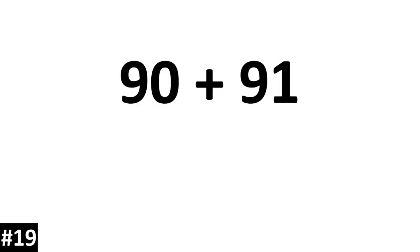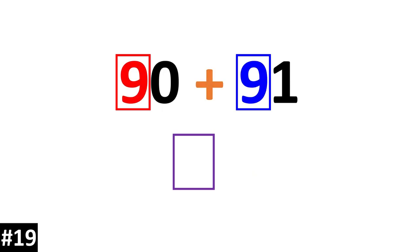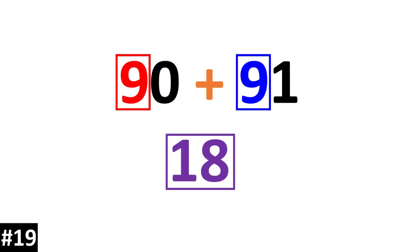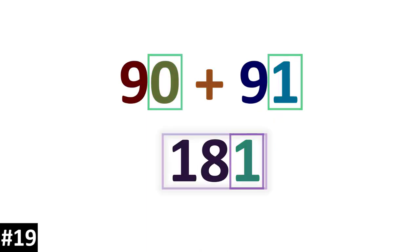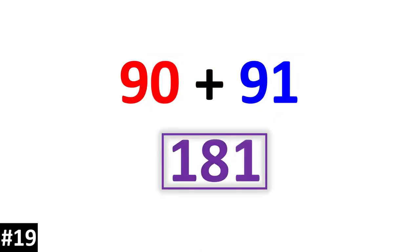90 plus 91. We have 9 tens plus 9 tens which equals 18 tens. We add the ones: 1. The answer is 181.